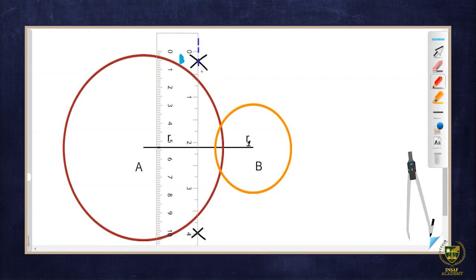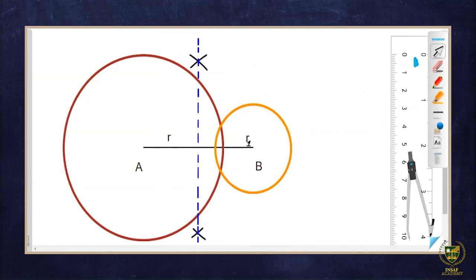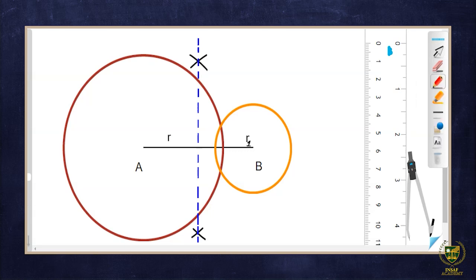Now I join those two intersection points of the arcs to get the perpendicular bisector — this gives us the midpoint. The concept we used here is the perpendicular bisector, where the 'bisector' part helps find the midpoint. I draw arrows on both sides, and the midpoint that appears is labeled M. M is the midpoint of line segment AB.